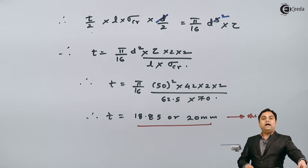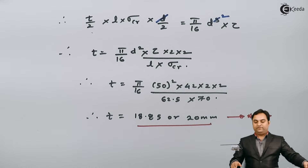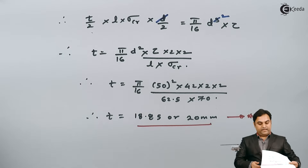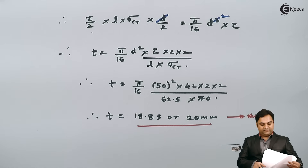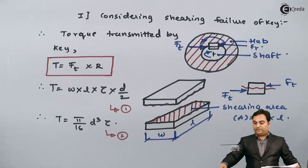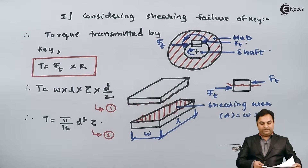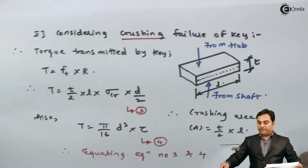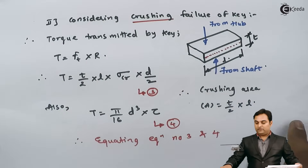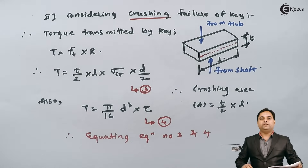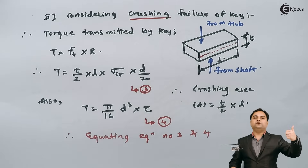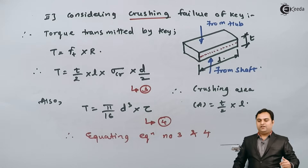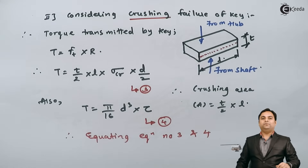So as we have seen in this video, we have designed the key by considering both shearing and crushing failure. We calculated all three dimensions: length = 62.5 mm, width = 16 mm, and thickness = 20 mm. I hope this problem is understood.